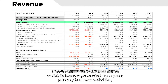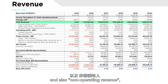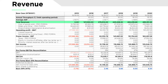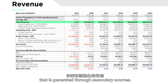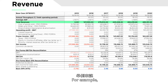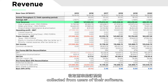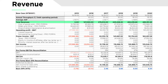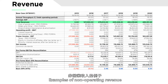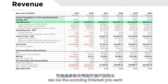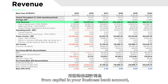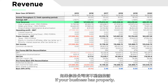Your revenue will be made up of the operating revenue, which is income generated from your primary business activities, and also non-operating revenue, which will be income that is generated through secondary sources. For example, a SaaS company's operating revenue will be the subscription fees collected from users of their software, or if you are a retailer, this would come from the sales of your product. Examples of non-operating revenue can be the interest you earned from capital in your business bank account, or even rental income if your business has property.